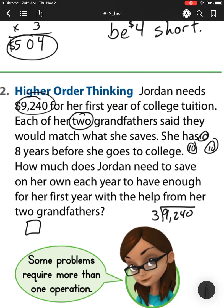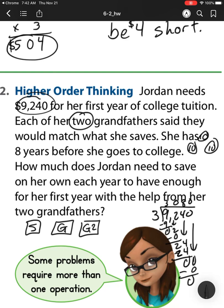How much does Jordan need to save on her own each year to have enough for her first year with the help of her 2 grandfathers? Well, what I have here is I have this $9,240. And it's been broken up into 3 groups. How I know that is one group is her savings. One is her grandfather's. And the other is her second grandfather. They're all going to pay the same amount. Well, I know 3 goes into 9 3 times. 3 goes into 2 0 times. 3 goes into 24 8 times. And 3 goes into 0 0 times. So she will need to save $3,080.